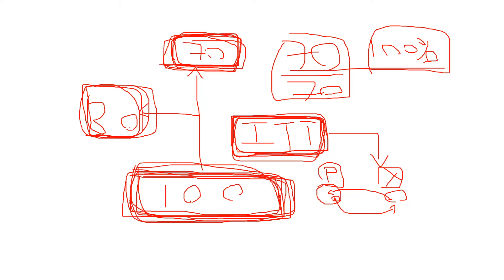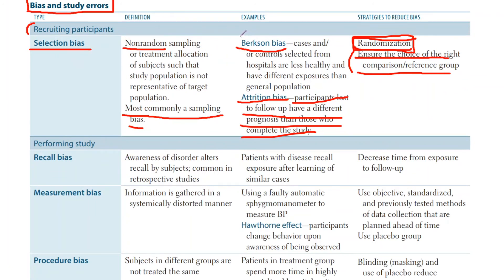This is why intention to treat analysis falls under selection bias. FA doesn't really mention it, but it is important and does show up on questions. Also, try to know the specific names of biases, because sometimes the exam will describe a scenario and ask you to name the specific bias — whether it's attrition, Berkson's, or others.